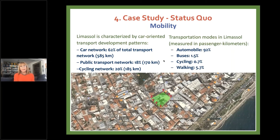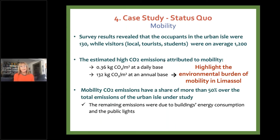Regarding mobility, the city of Limassol is characterized by car-oriented transport, with automobile transportation reaching 92 percent. The public transport bus network accounts for only 1.5 percent, cycling 0.7 percent, and walking 5.7 percent. Mobility CO2 emissions were estimated to be very high, with a share of more than 50 percent of the total emissions of the urban island, highlighting the significant environmental burden of mobility in Limassol.